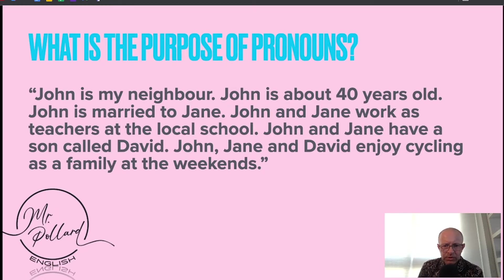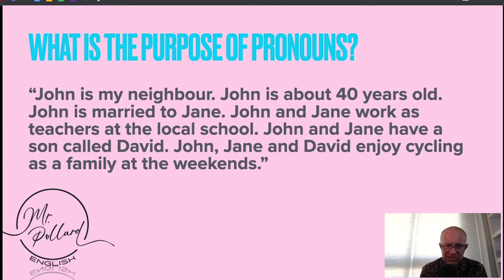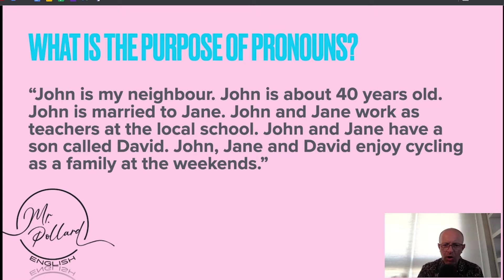So: John is my neighbour. John is about 40 years old. John is married to Jane. John and Jane work as teachers at the local school. John and Jane have a son called David. John, Jane and David enjoy cycling as a family at the weekends. Just pause — what is it that is a little bit awkward about this paragraph?